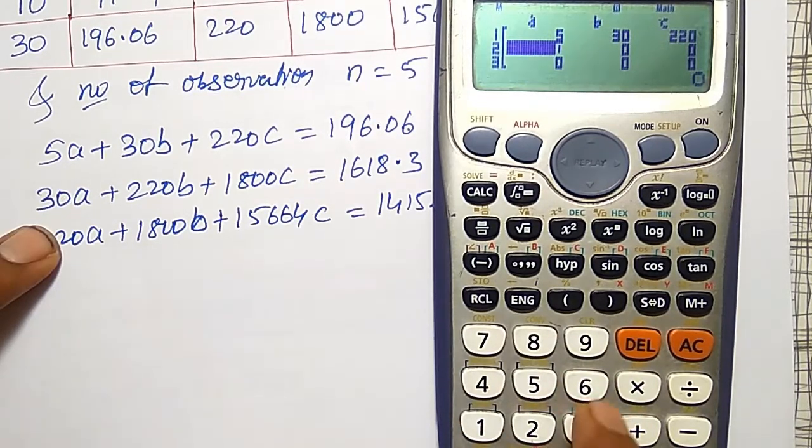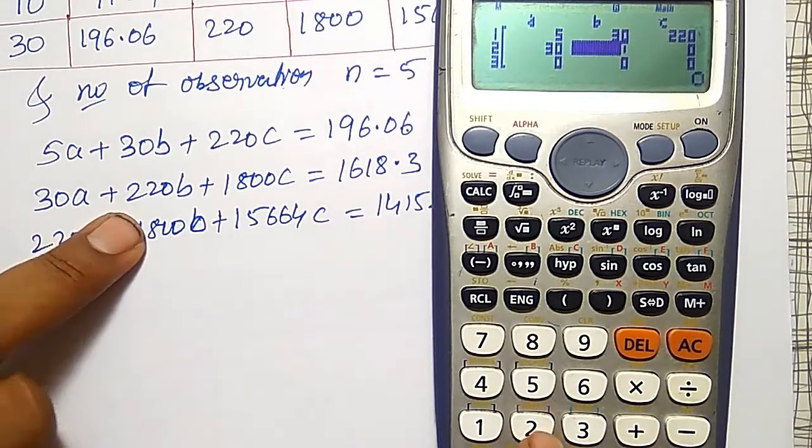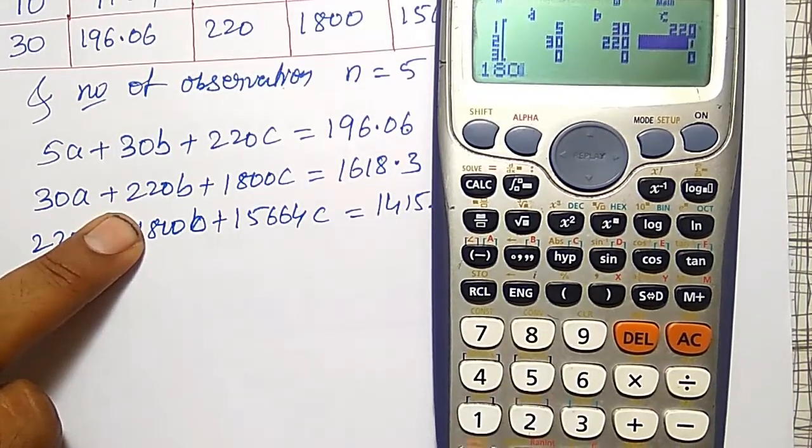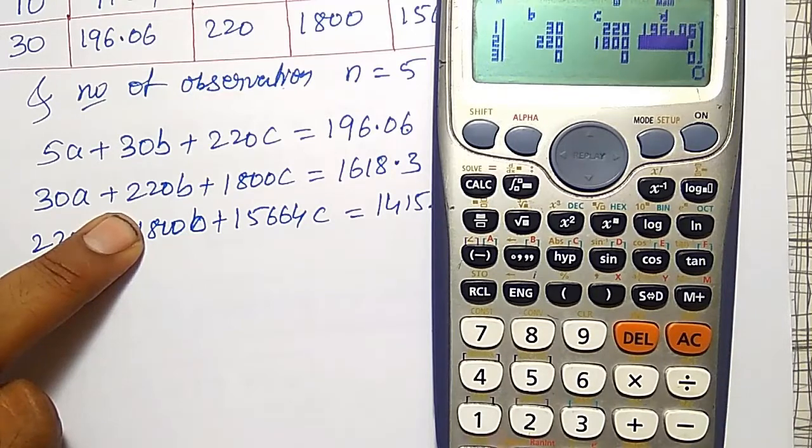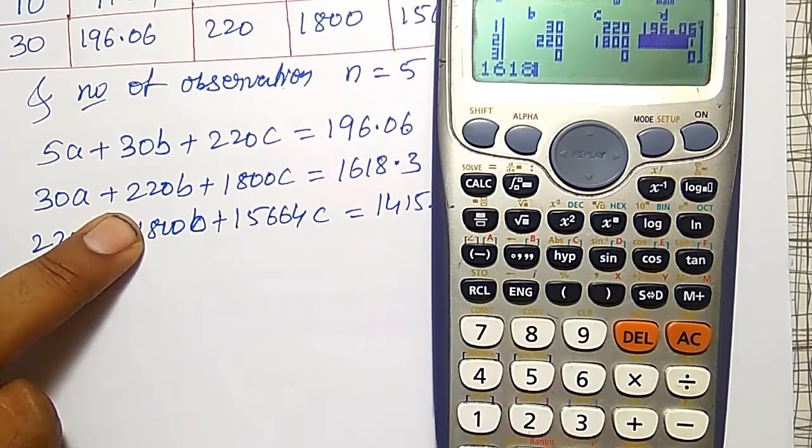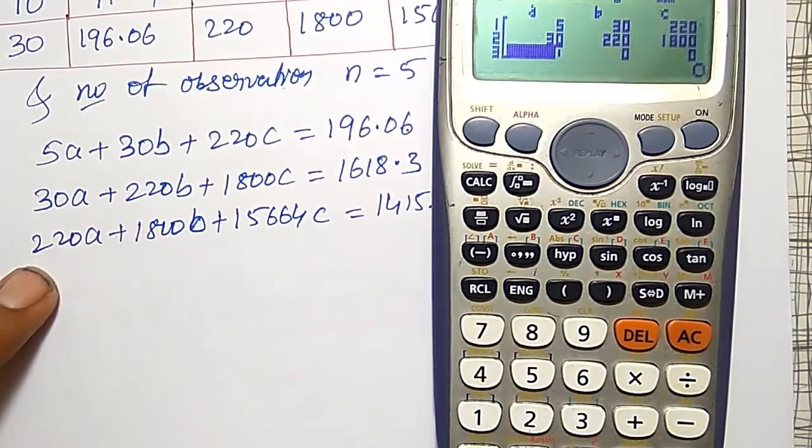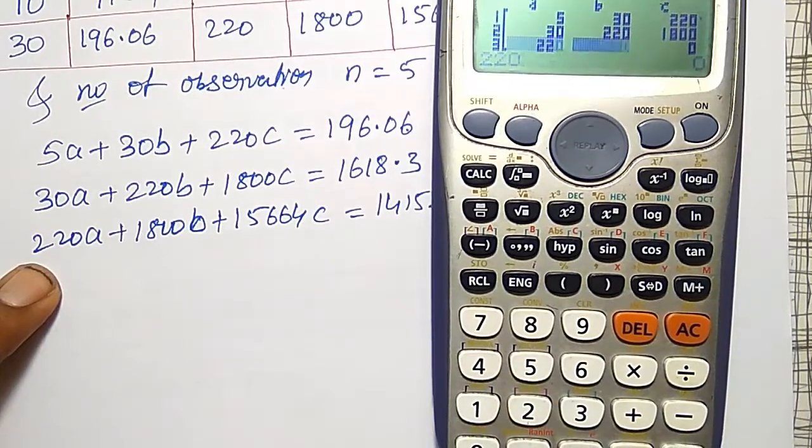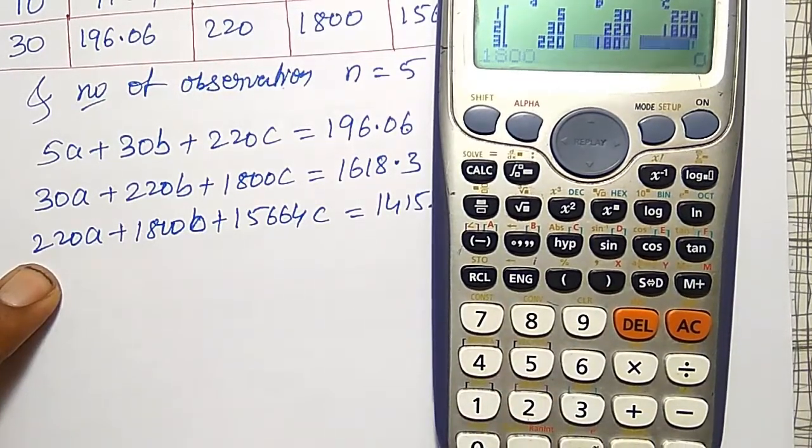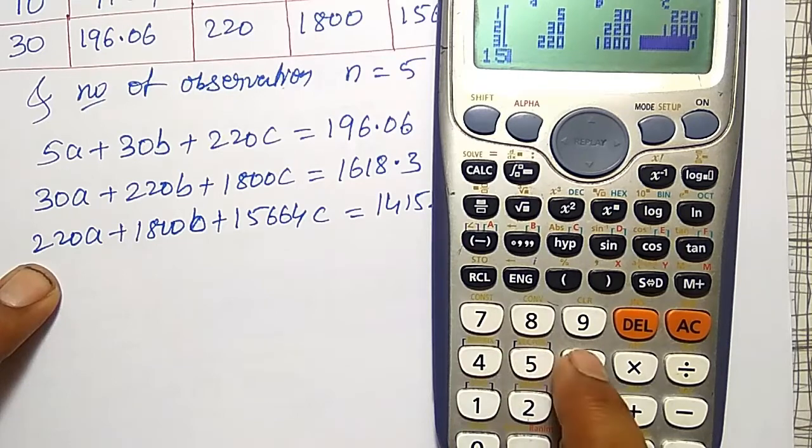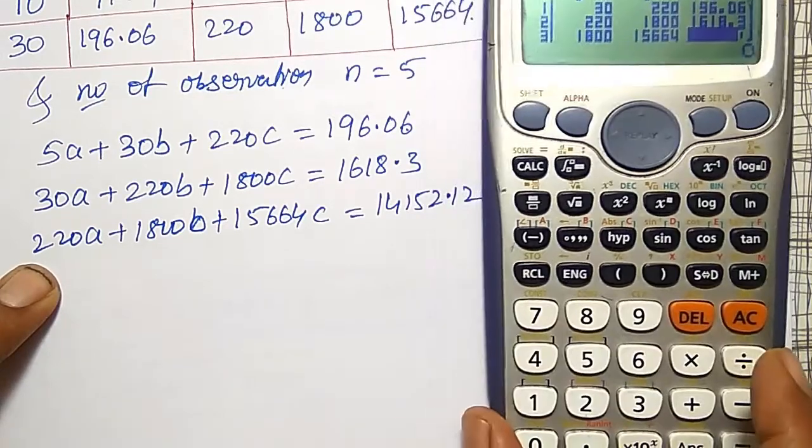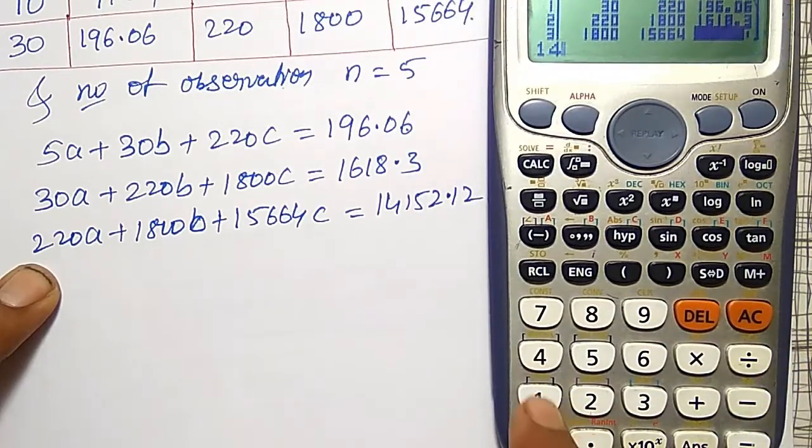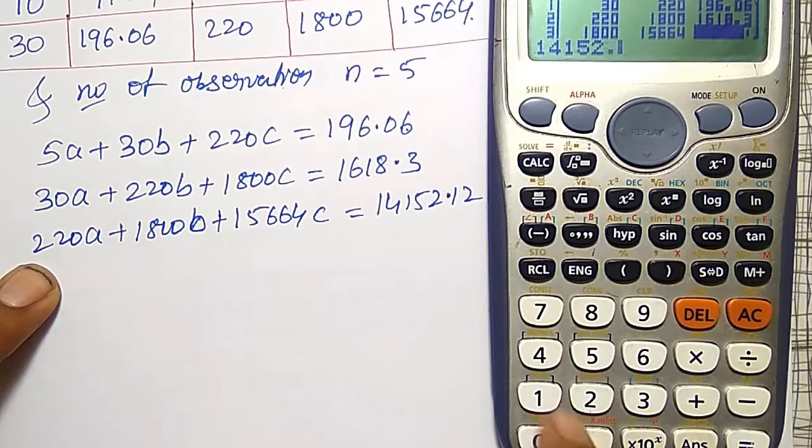5 equal to 30 equal to 220 equal to 196.06. Next, 30, second equation 220, 1800 and 1618.3. And third, 220, 1800 and 15664. And finally, right hand side values, 14152.12.